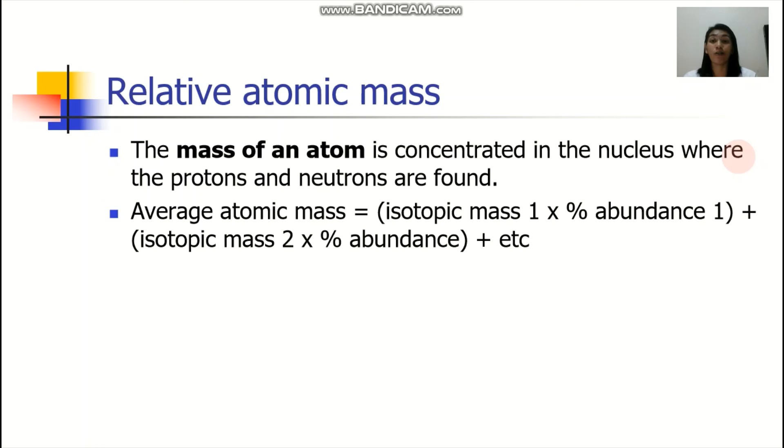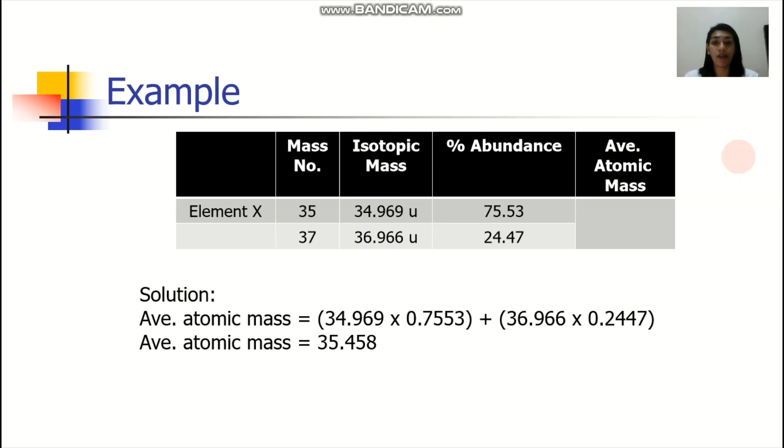We don't have to worry about this because it has been already recorded. It is already provided, yung atomic mass. But again, for example, you are given the isotopic mass, and you just wanted to confirm what type of or what element is that. You could actually compute for the average atomic mass.